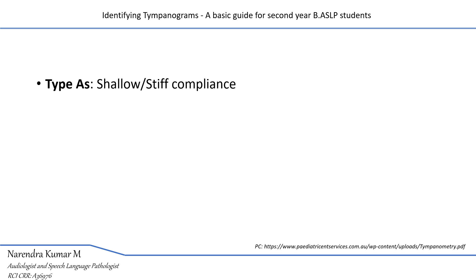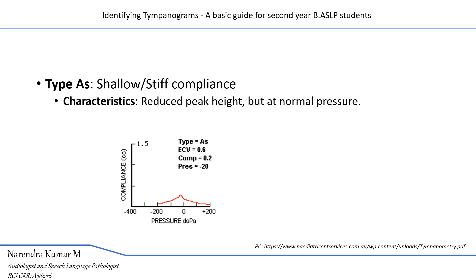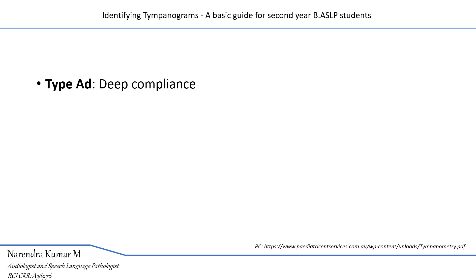Type AS tympanogram indicates a shallow or stiff compliance — restricted movement of the tympanic membrane. It is characterized by a reduced height of the tympanogram, however the middle ear pressure will be within the normal range. It indicates otosclerosis or tympanosclerosis, and sometimes even a thicker tympanic membrane which is not vibrating in the normal range.